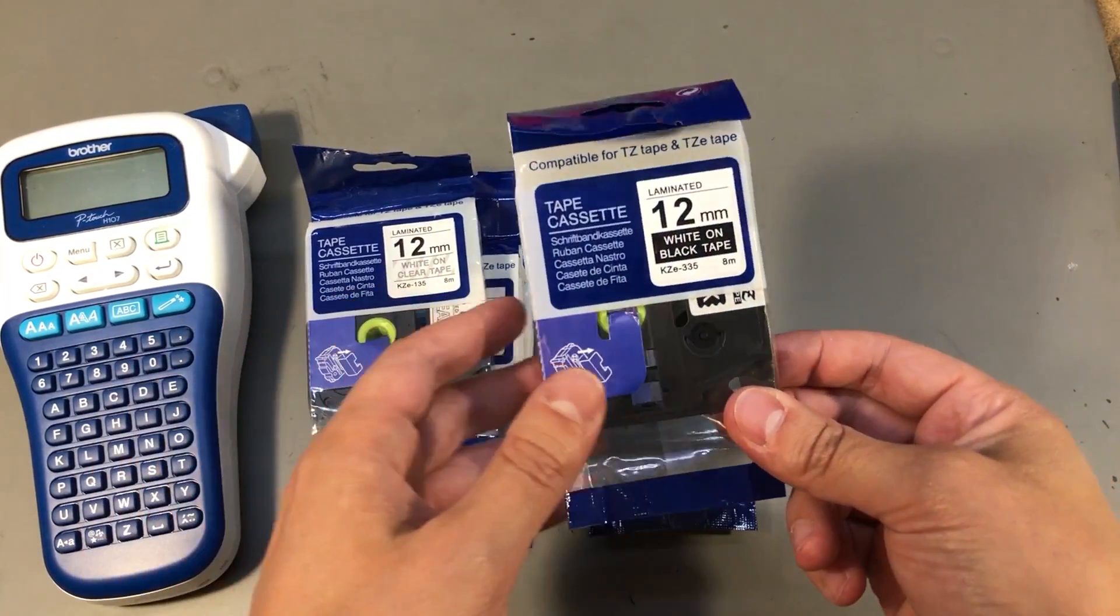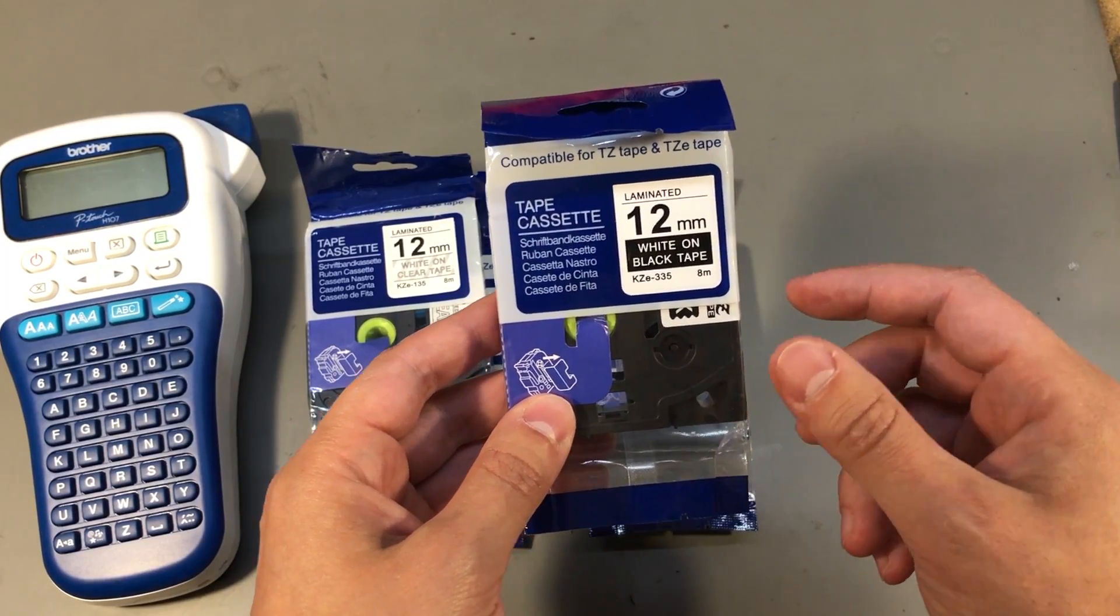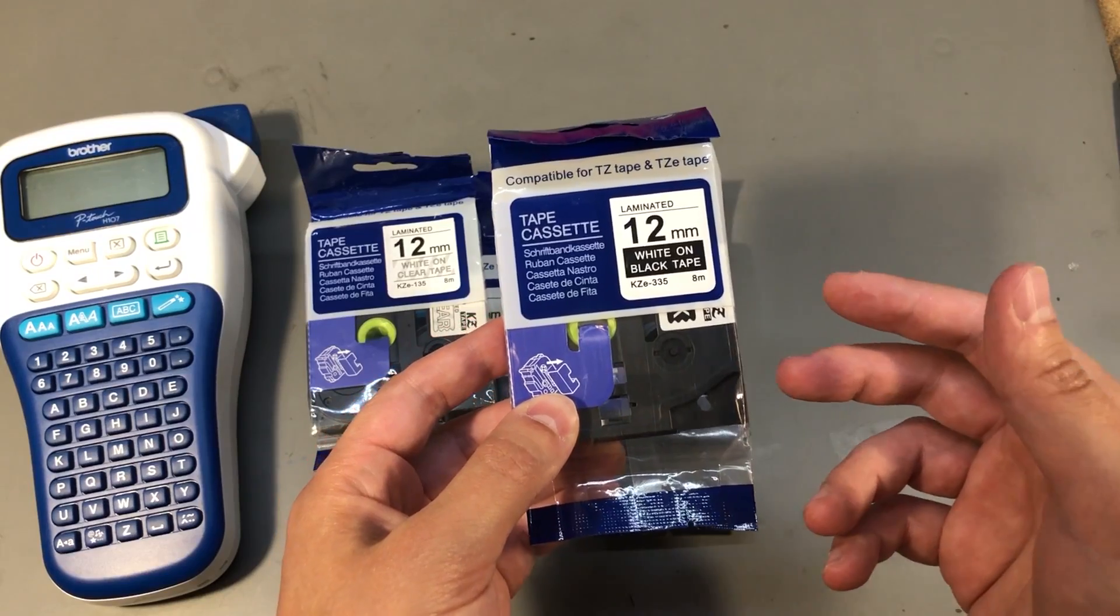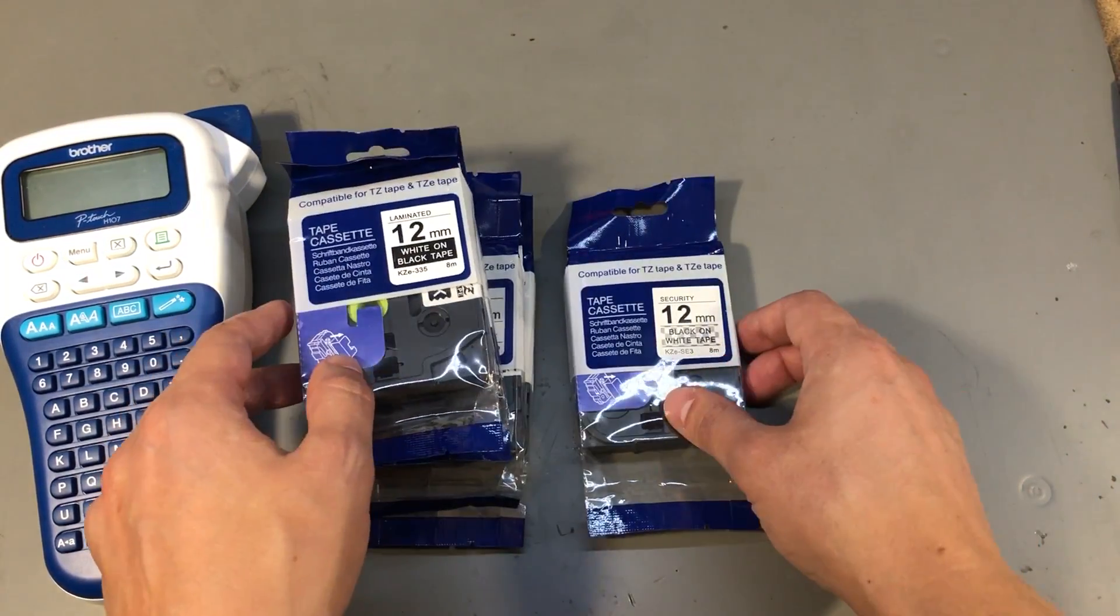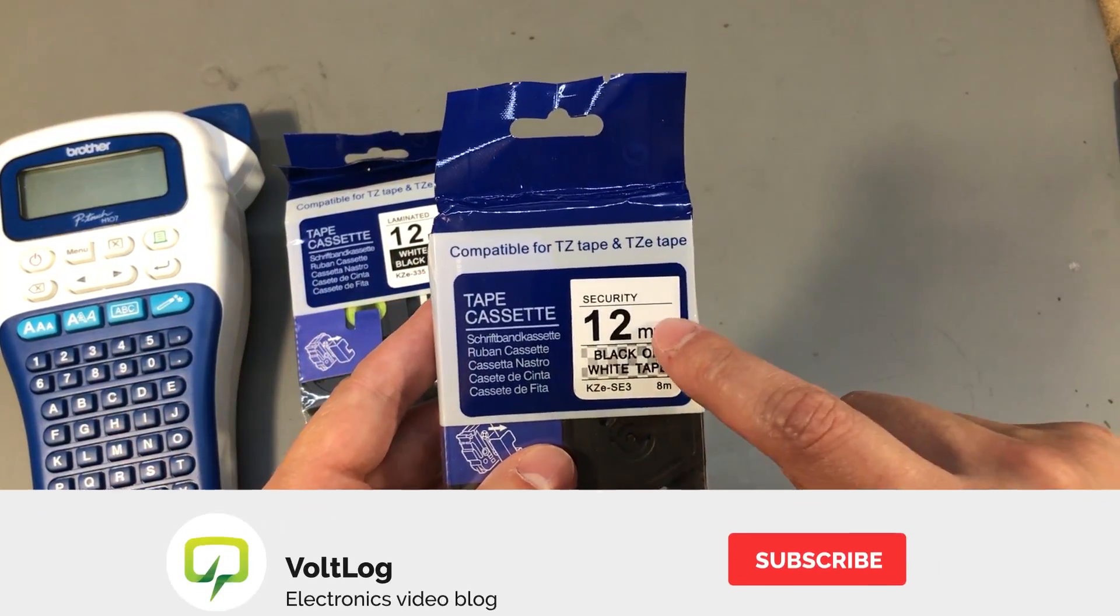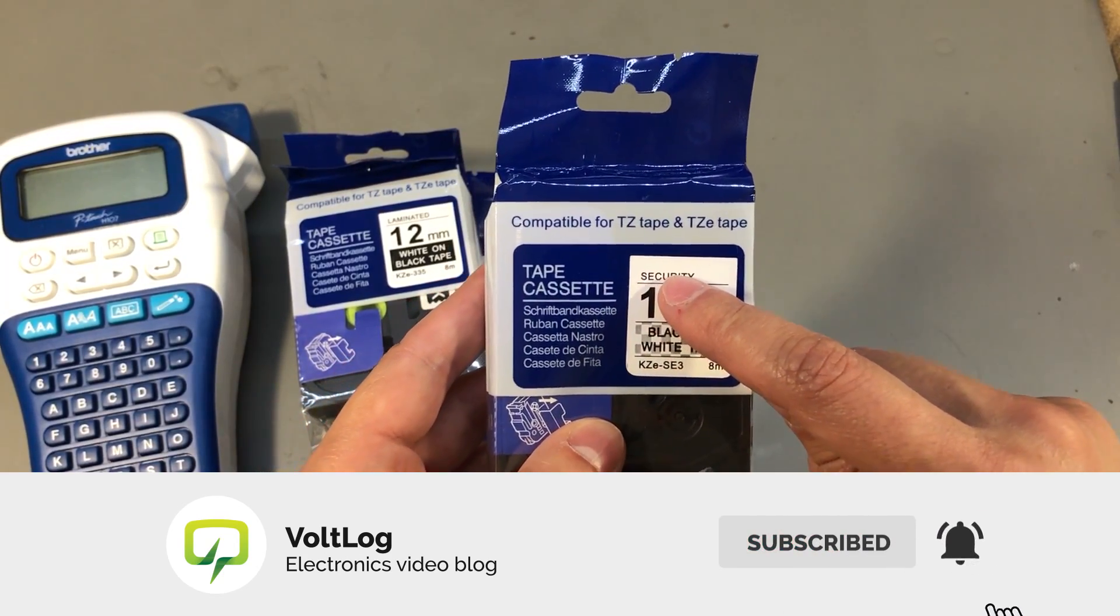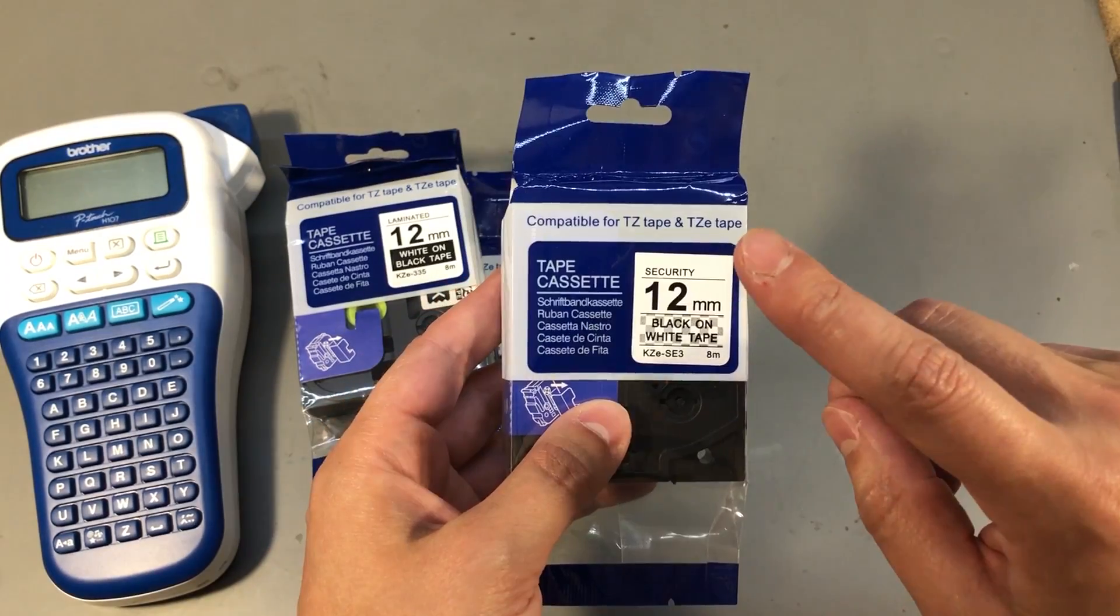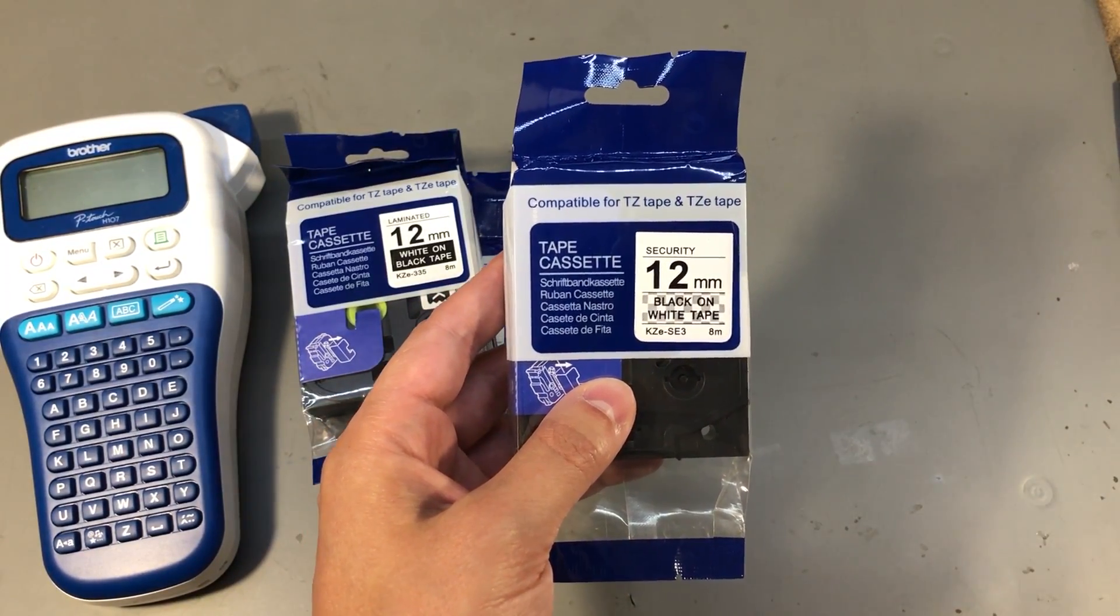Then I have white on black tape which could be general purpose or for sticking on dark surfaces and one that seemed very interesting I have this one which is black on white tape but it's security tape so I'm guessing this could be used like a seal. Let's just try this and see how it works out.